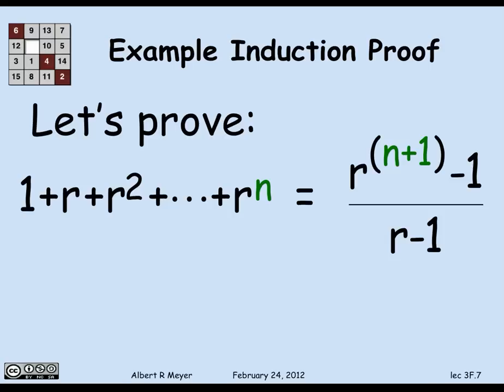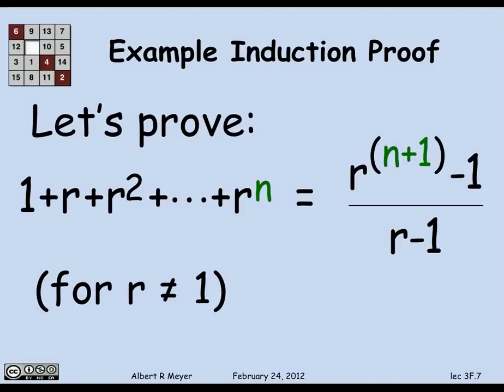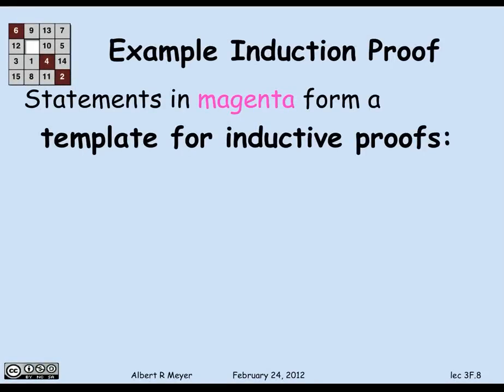Let's prove a formula we've actually seen before — previously proved using the well-ordering principle — for a geometric sum: the sum of r to the 0, r to the 1, up to r to the n equals r to the n plus 1 minus 1, divided by r minus 1. This only works if r is not 1, since the denominator can't be 0. I'll do the proof while showing a standard template you can use for induction proofs.